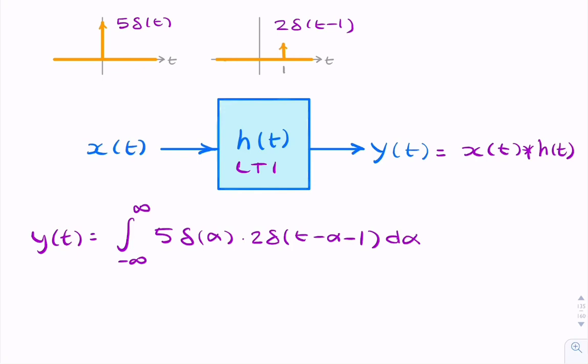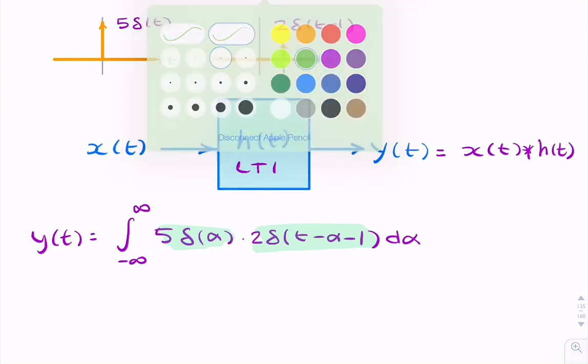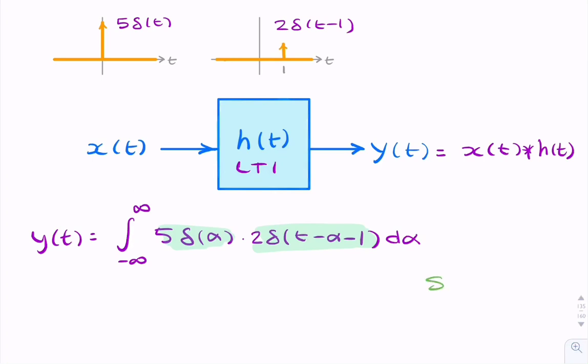So now we have this strange situation where we have two impulses multiplied together, and we want to find the integral. So remember the sifting property of the delta Dirac function, or the Dirac delta function. And that said,